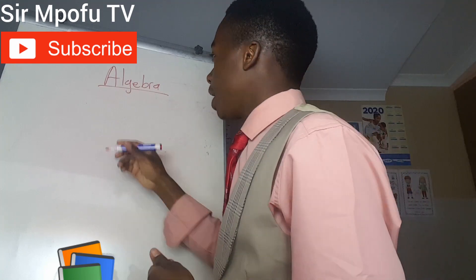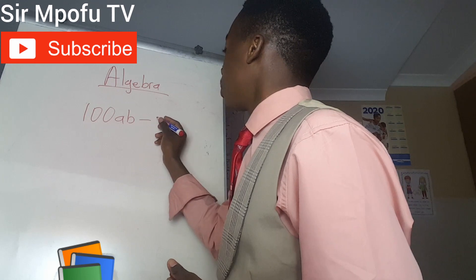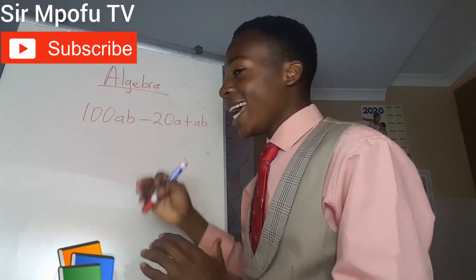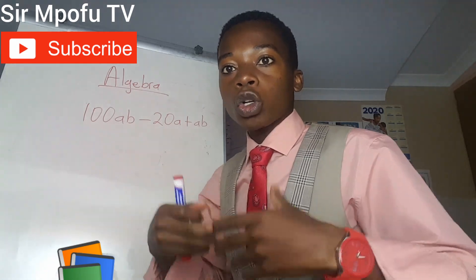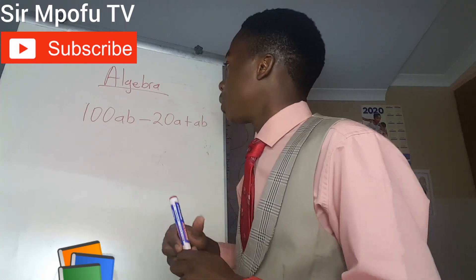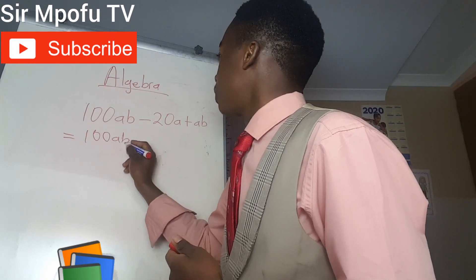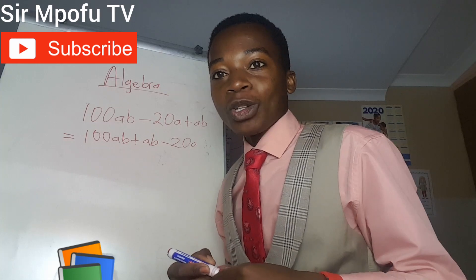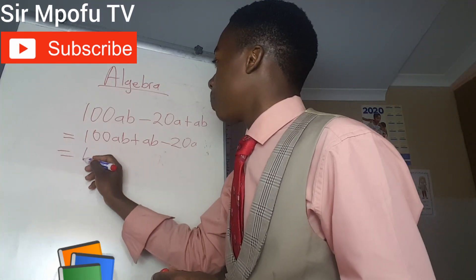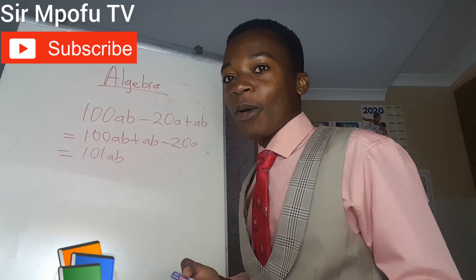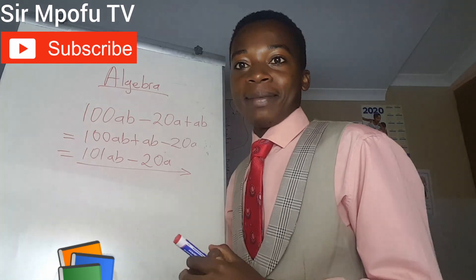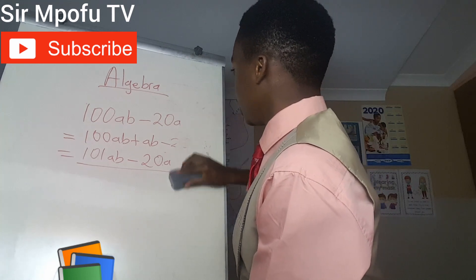There is something I want you to take note of. Let's say we have 100ab minus 20ab plus ab. Note that ab and a are not like terms. If there are 2, 3, or 4 algebras in a term, they must all match for them to be like terms. So 100ab and ab are like terms, but not with 20a. Collecting like terms: 100ab plus ab minus 20a. That gives us 101ab minus 20a. Remember, there's an invisible coefficient of 1 in front of ab. This is our final answer.